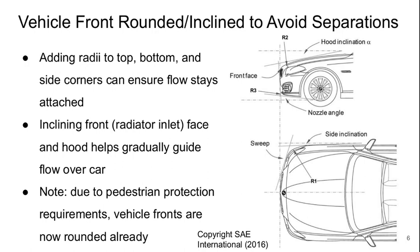Beginning with the front of the vehicle, the front is rounded and/or inclined to avoid separation. We basically add radii to the top, the bottom, and the side corners of the front end to ensure that the flow always stays attached as it moves around.